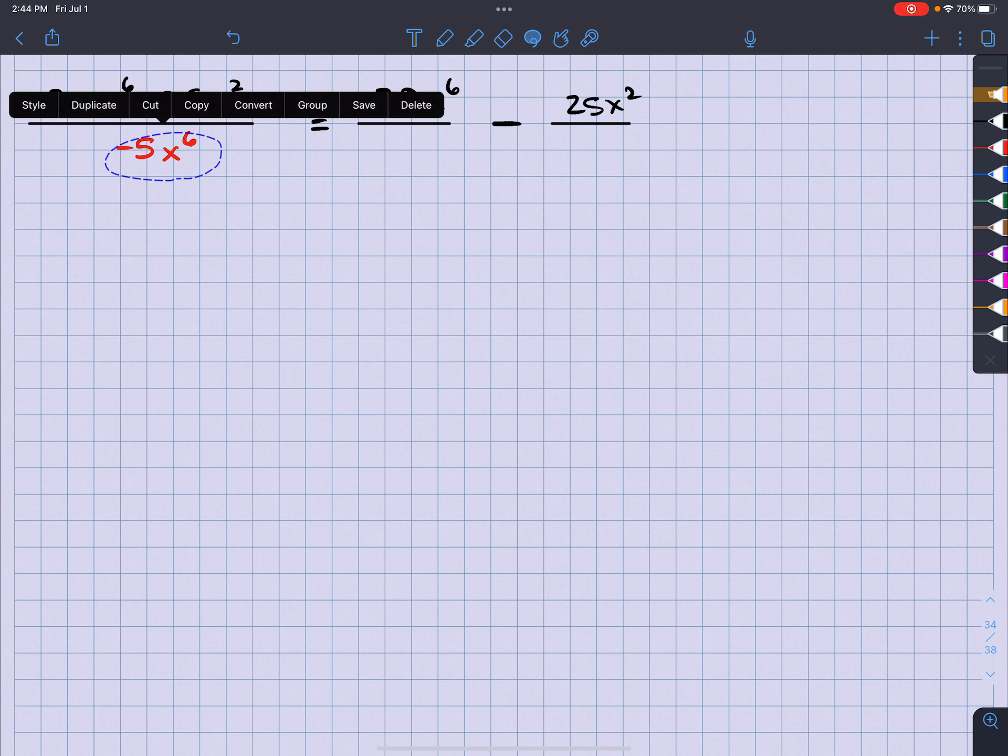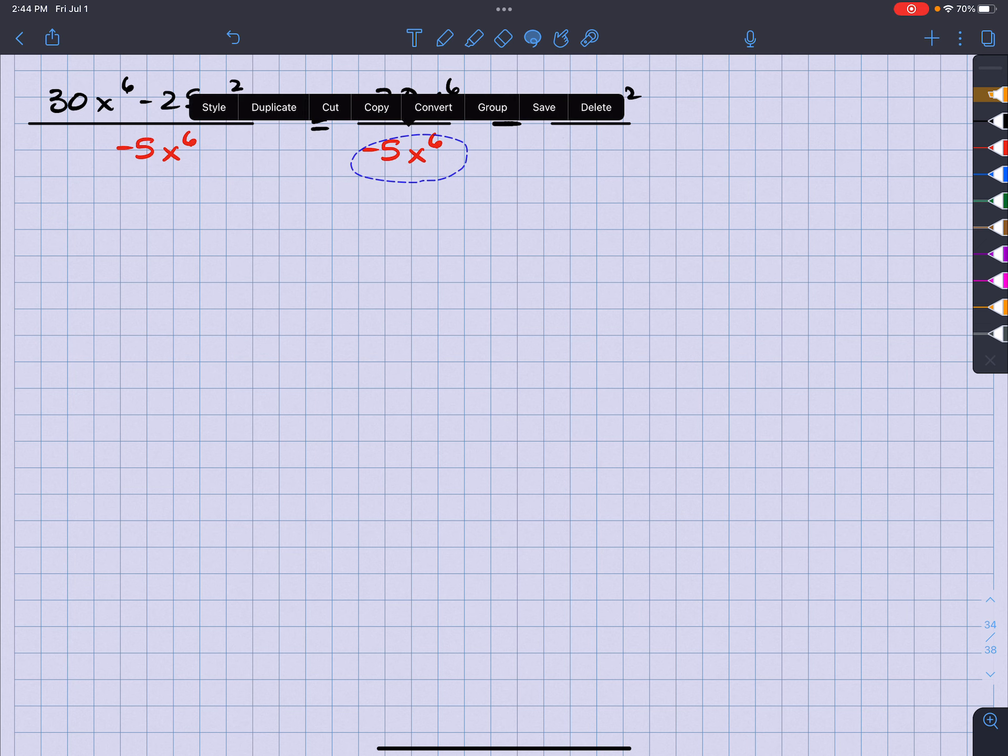So we're going to take this denominator and have it underneath each one of those terms, and then we're going to simplify each term by themselves.